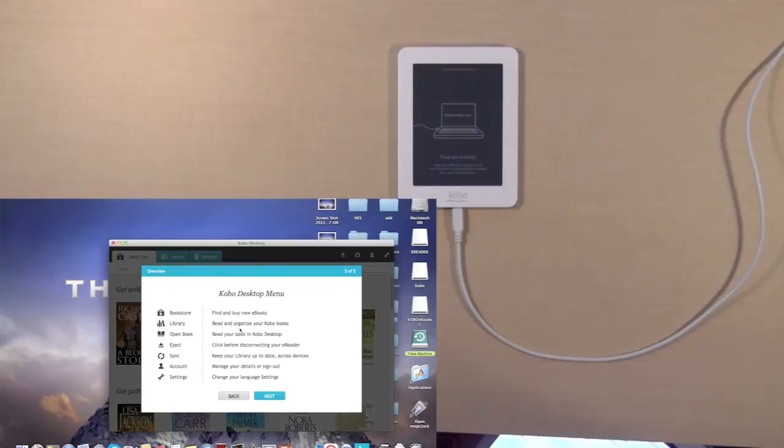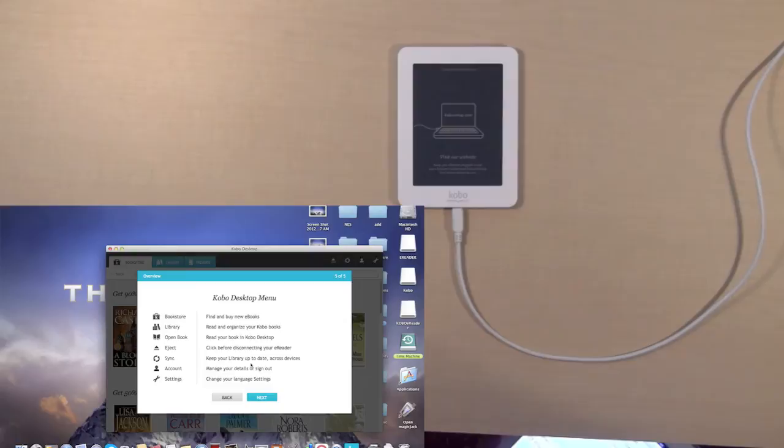Kobo desktop menu. Find and buy new books. Read and organize your Kobo books. Read your books in Kobo desktop. Click before disconnecting your e-reader. Keep your library up to date across devices.